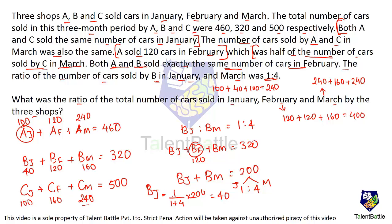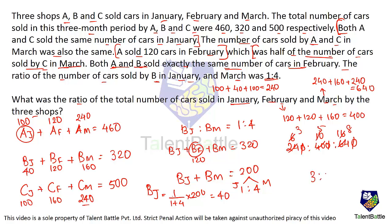January total comes out to 240, February total to 400, and March total to 640. The ratio of total cars sold in January, February, and March is 240 to 400 to 640. Dividing by 80, we get 3 to 5 to 8. So the required ratio is 3 is to 5 is to 8.